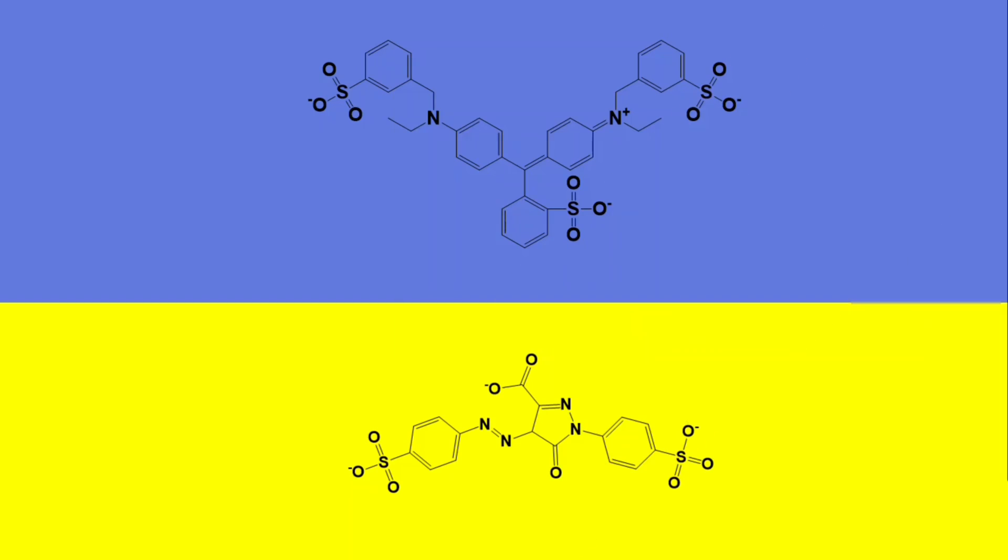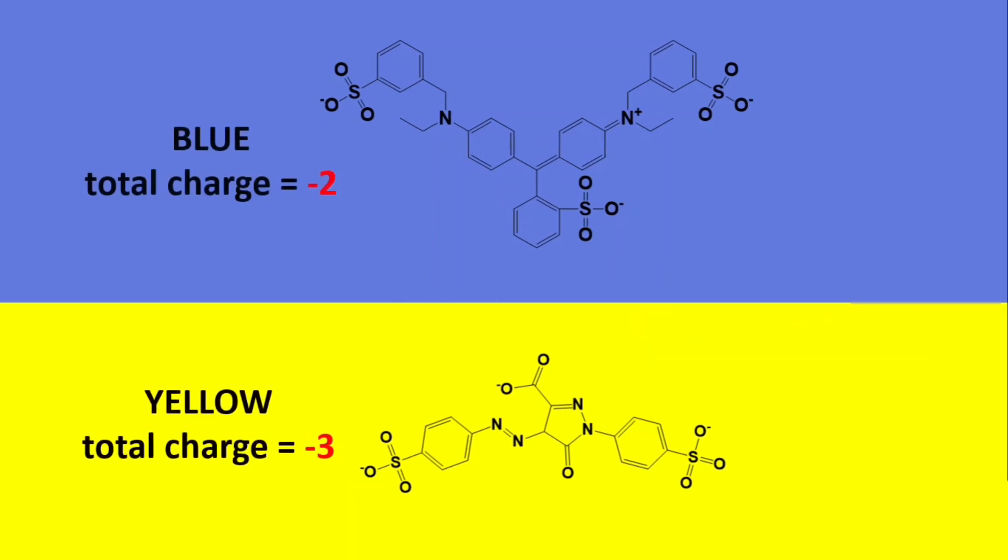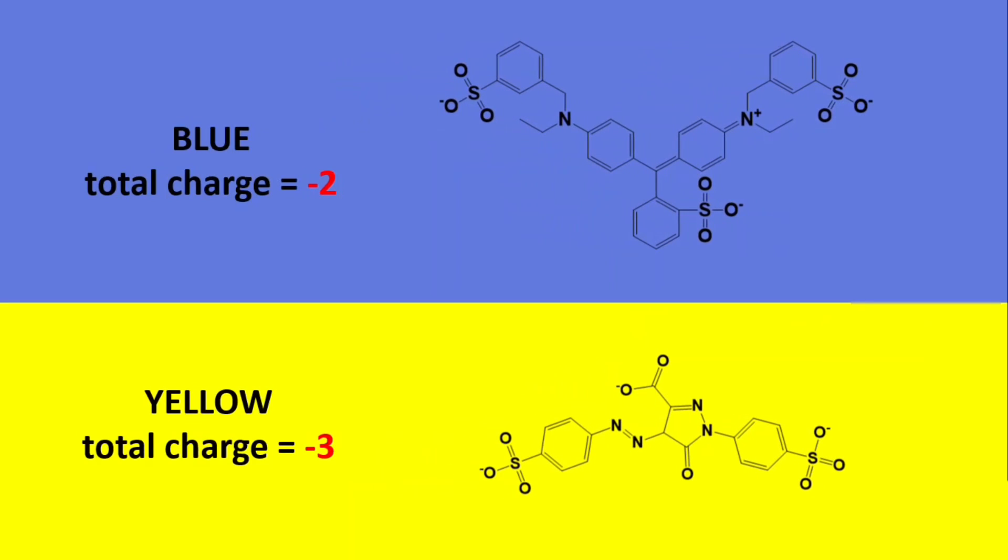The second factor to consider is electric charge. The blue dye molecules have an electric charge of negative 2, which is smaller than the negative 3 charge on the yellow dye molecules. This larger charge on the yellow dye allows for stronger attraction to water.